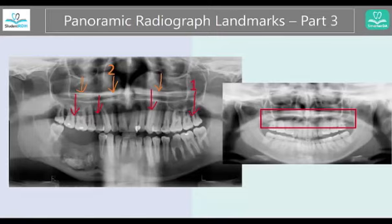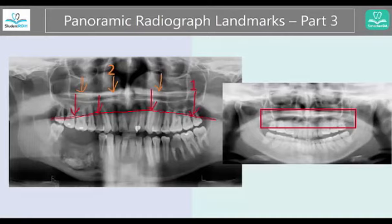Number one is indicating this line here. What would that be? This is going to be the tongue. If you don't put the tongue on the roof of the mouth in an L shape towards the tip of the palate, you will have this radiolucency — the dark area — because this is actually the airspace. That's why we ask our patient to swallow first and then put the tip of the tongue to the palate and stay there until the panoramic radiograph is done. This is actually just the border of the tongue.